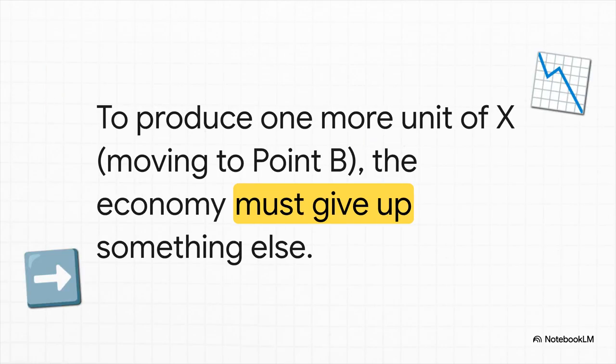To produce just one more unit, to go from eight to nine, we have to shift our resources. That means we have to move along the curve from point A to a new spot. Let's call it point B.